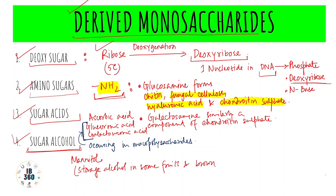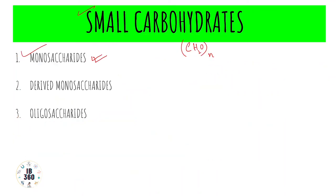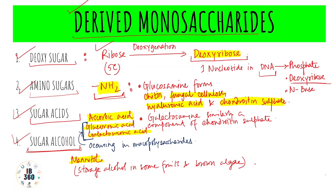To summarize the important examples covered today: deoxyribose under deoxy sugars; chitin, fungal cellulose, hyaluronic acid, and chondroitin sulfate under amino sugars; ascorbic acid, glucuronic acid, and galacturonic acid under sugar acids; and mannitol under sugar alcohols. This completes derived monosaccharides and the topic of monosaccharides. In the next class, we will discuss oligosaccharides.